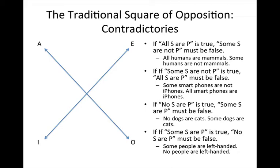Before moving on, go ahead and pause the video to look at the examples. I want to point out that the examples I give are meant to pump your intuitions about the correctness or illegitimacy of certain inferences. But what we want to bear in mind is that the logical structure — not the content — is what makes an inference legitimate or illegitimate. When we move on, I'm thinking of the Venn diagrams that will offer a visual representation of the logical structure of each of these proposition types.